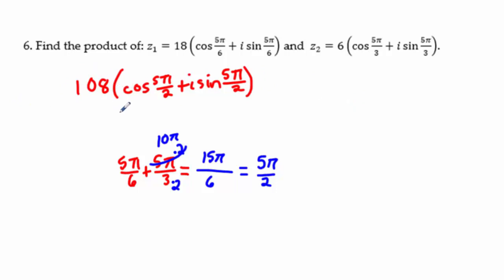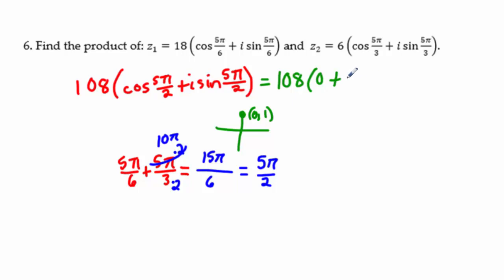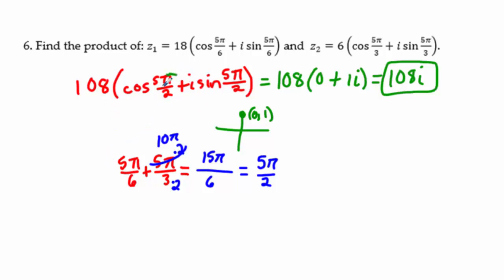The answer is 108(cos 5π/2 + i sin 5π/2). The directions are a bit unclear on whether to leave it in trig form or convert to complex form. To convert: 5π/2 lands at the same position as π/2, which is at the top. Cosine there is 0 and sine is 1, so 108(0 + 1i) = 108i. If numbers land nicely on the unit circle like this, we go ahead and simplify.